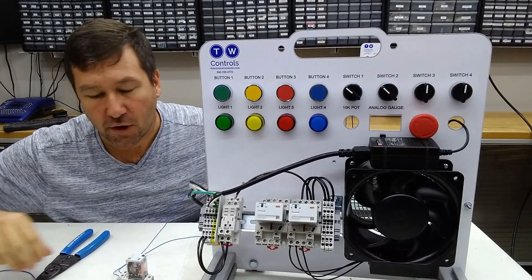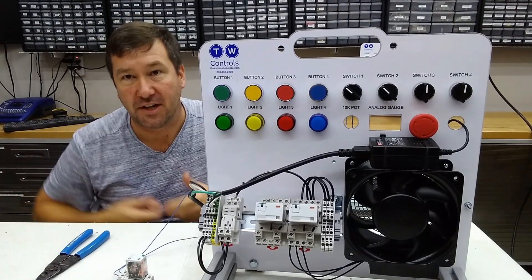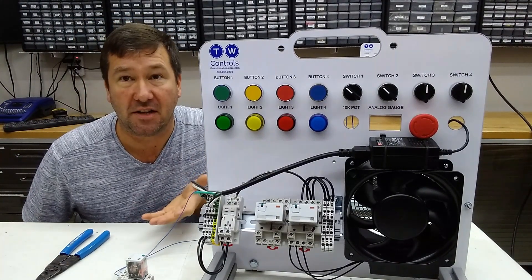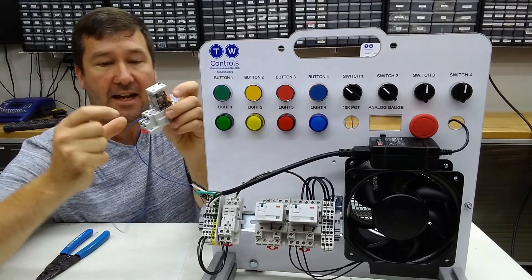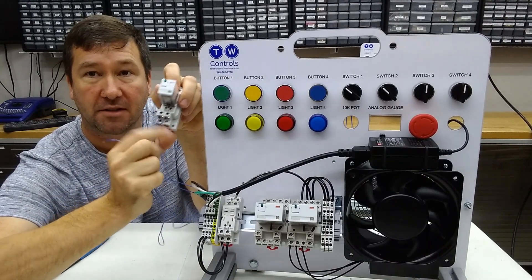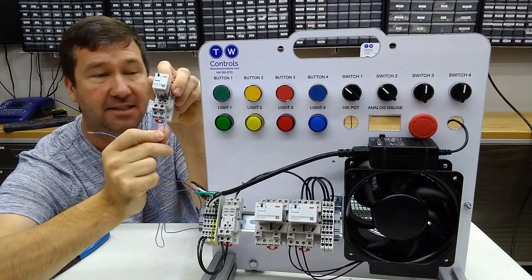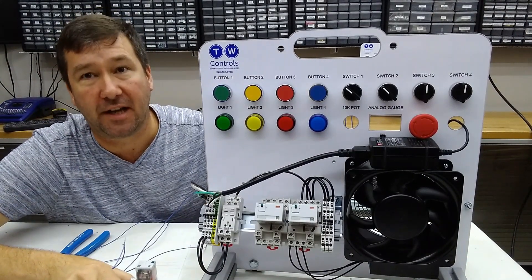Now let's take it a step further. While we have it just like it is, let's say we wanted to know that this relay was energized on the front of the panel. To do that, we can simply take a wire from across the same coil where we're connected here to one of our indicator lights.